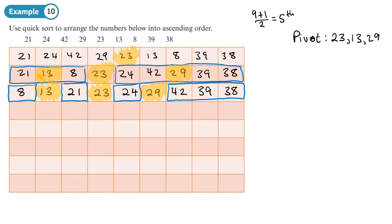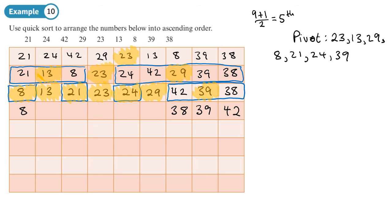The order of pivots chosen is: 23, then 13 and 29, then 8, 21, and 24, which pivot around themselves. Then 39 is chosen as a pivot, and 38 and 42 are pivoted around 39 — placing 38 to the left and 42 to the right. This gives us: 8, 13, 21, 23, 24, 29...